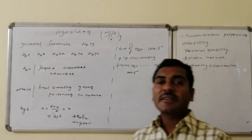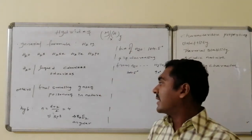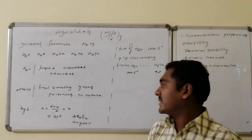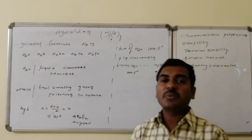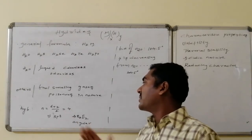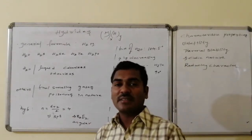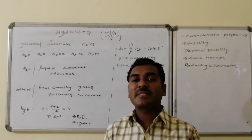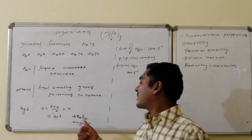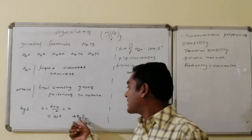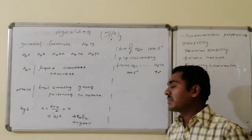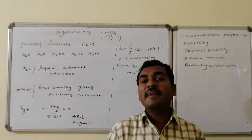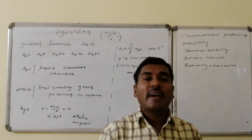For the hybridization of Group 6A hydrides, the central atom is the Group 6A element connected with 2 monovalent hydrogen atoms. Using the formula: (central atom valence electrons + number of monovalent atoms) ÷ 2 = 8÷2 = 4, giving sp³ hybridization. Out of 4 connectivities in sp³ hybridization, 2 are bonded and the remaining 2 are lone pairs of electrons, so it belongs to the AB₂E₂ category, giving an angular shape.